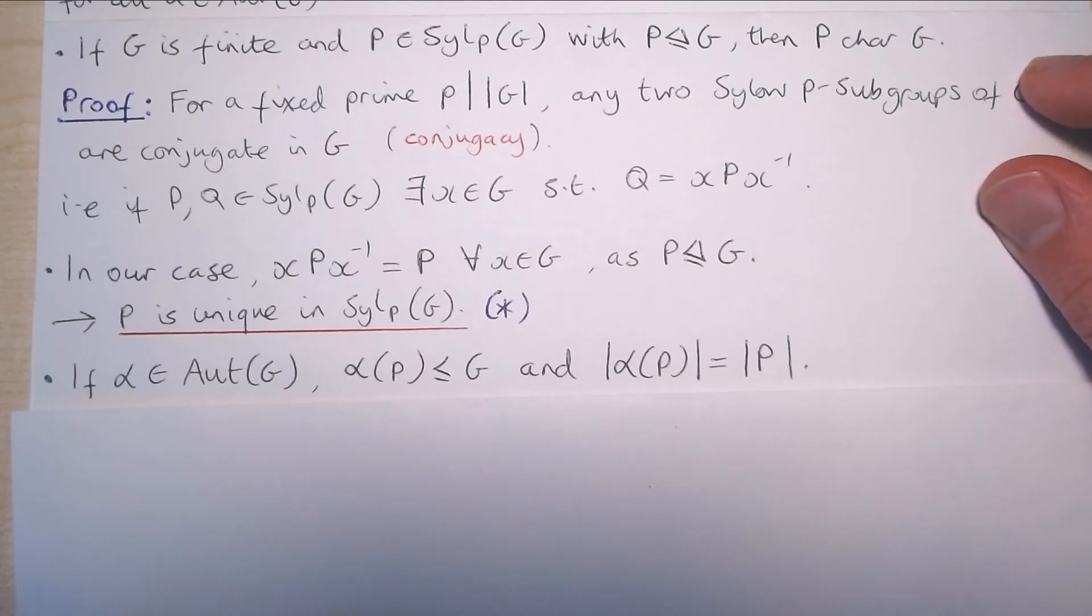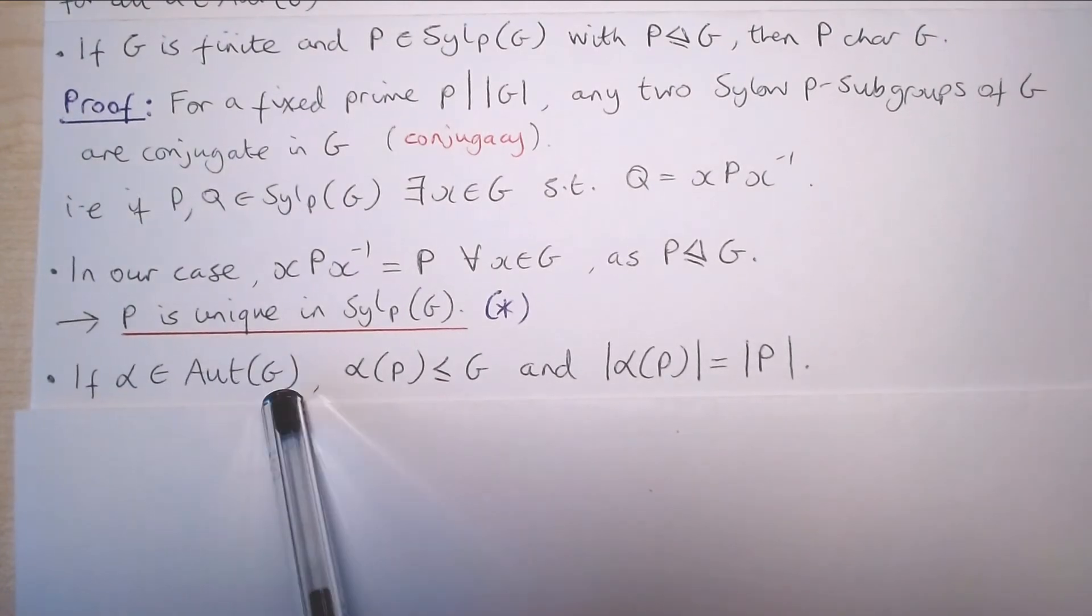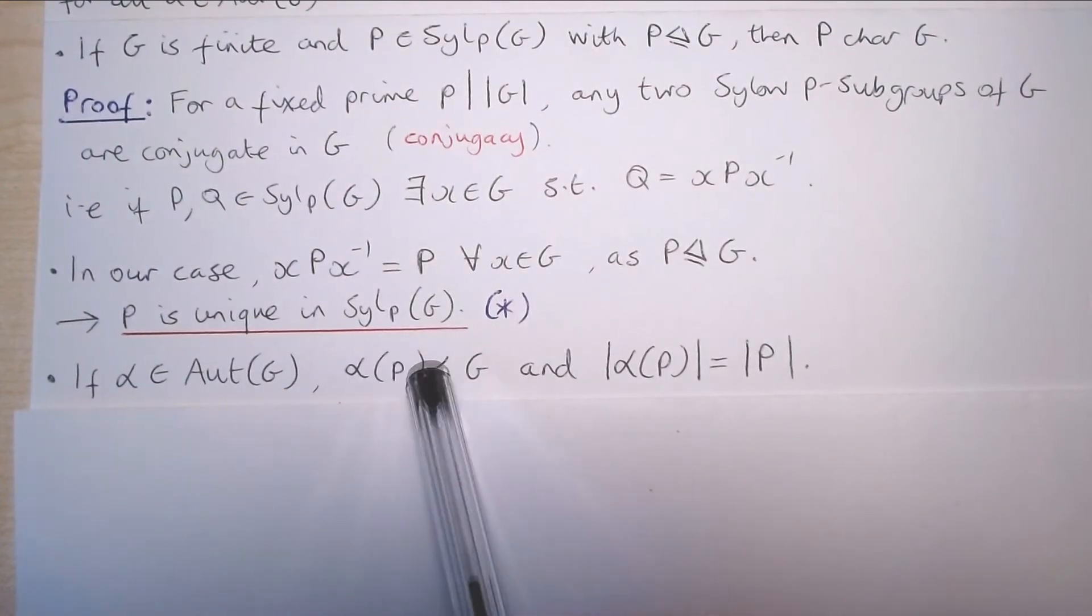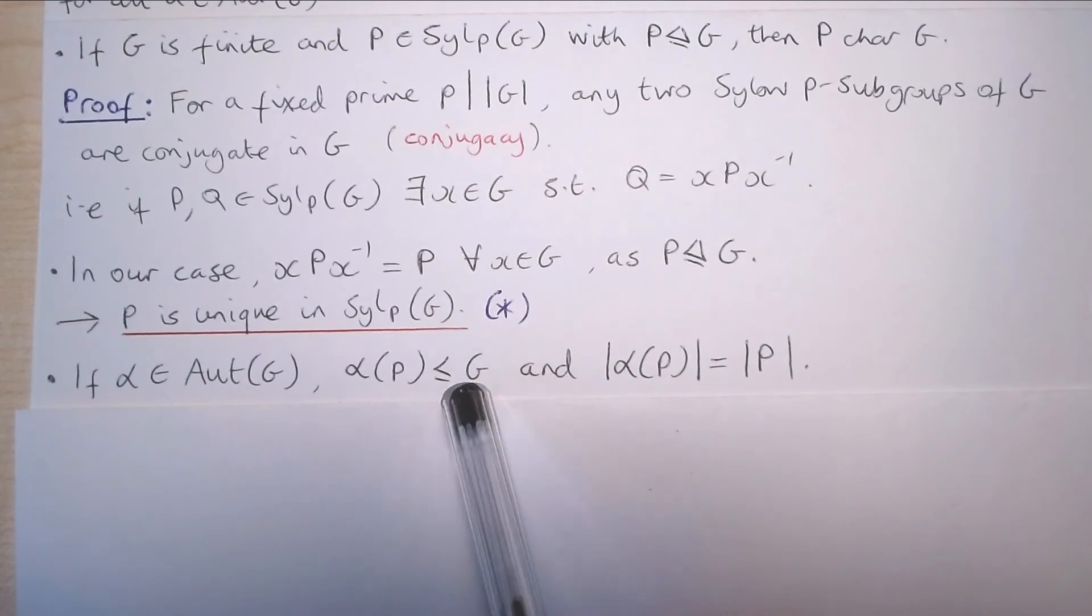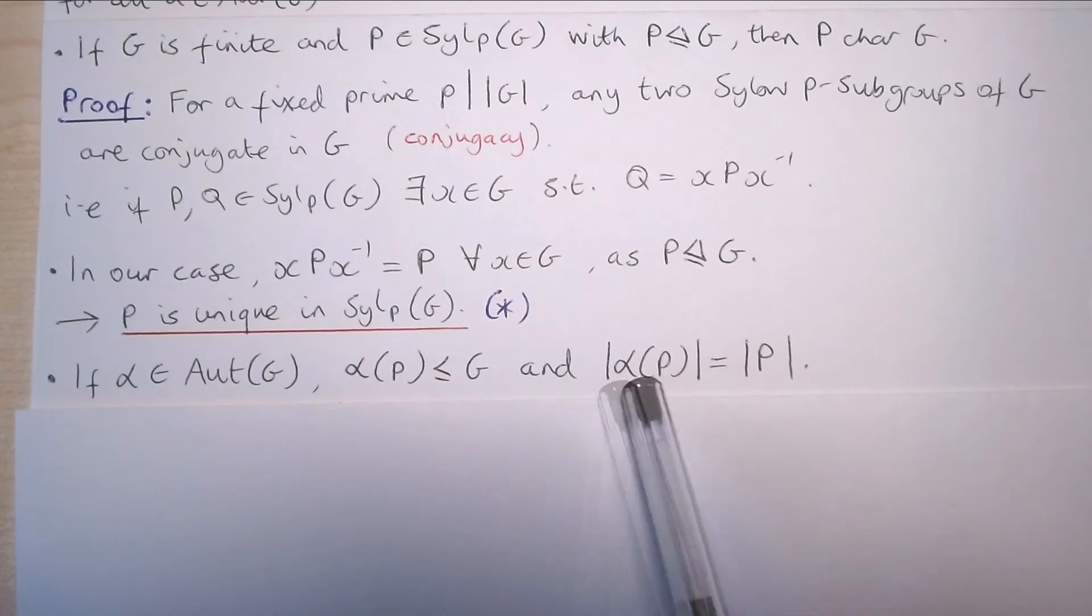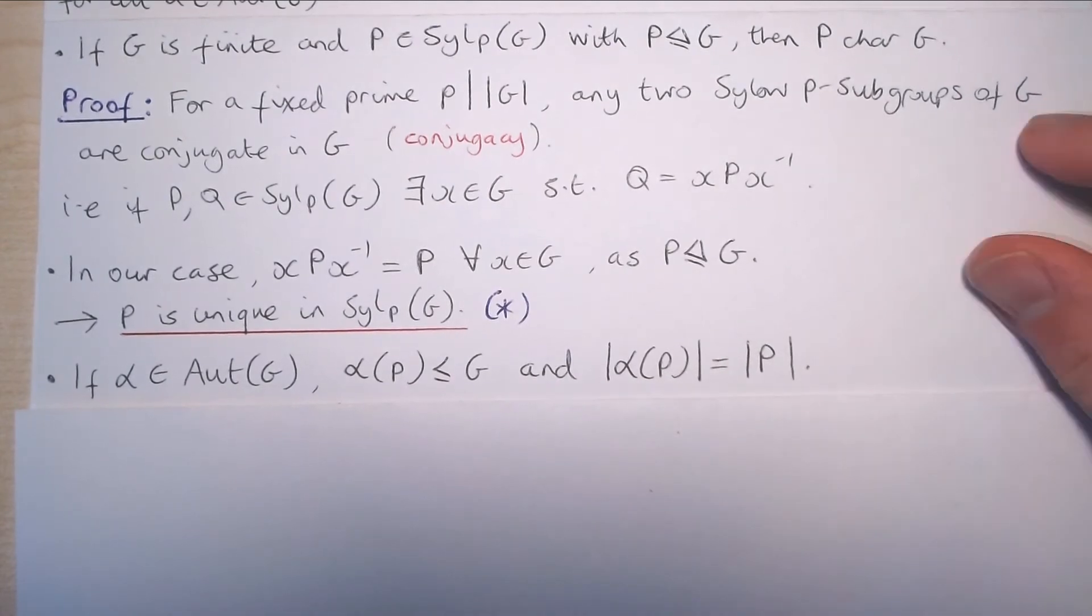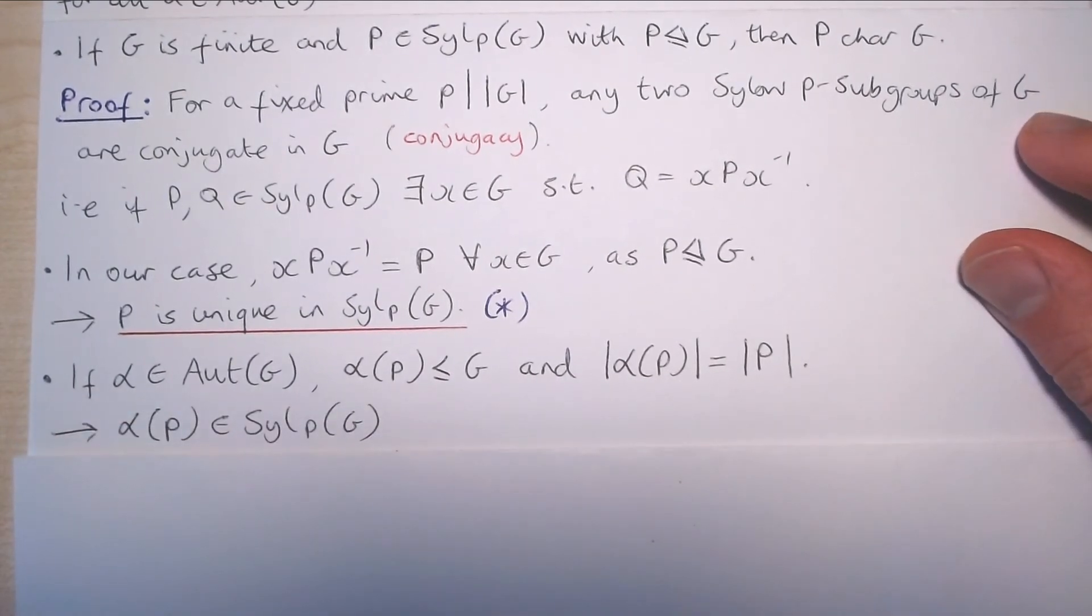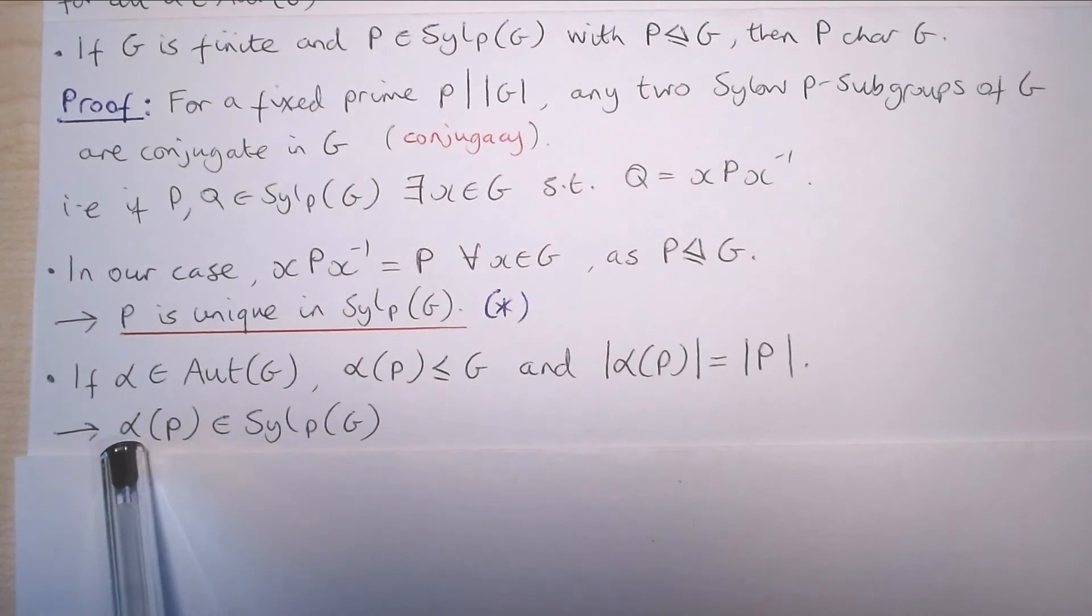Then if alpha is an automorphism of G, alpha of P is a subgroup of G and it's of order |P|. It's the same size as our subgroup P. In other words, alpha of P is a Sylow P-subgroup of G.